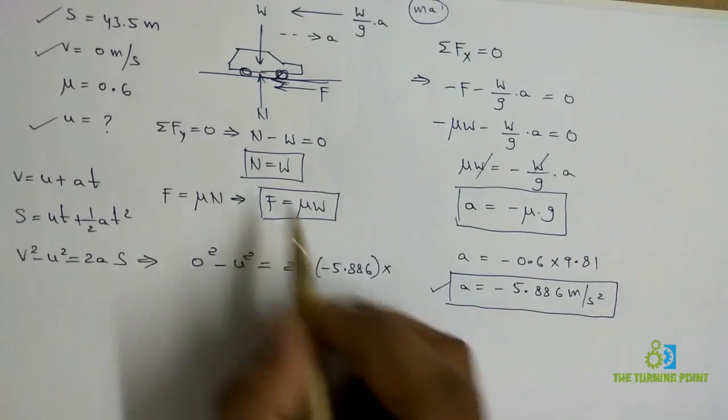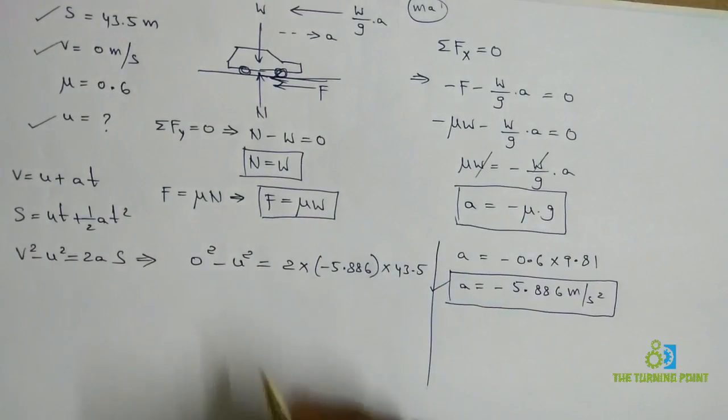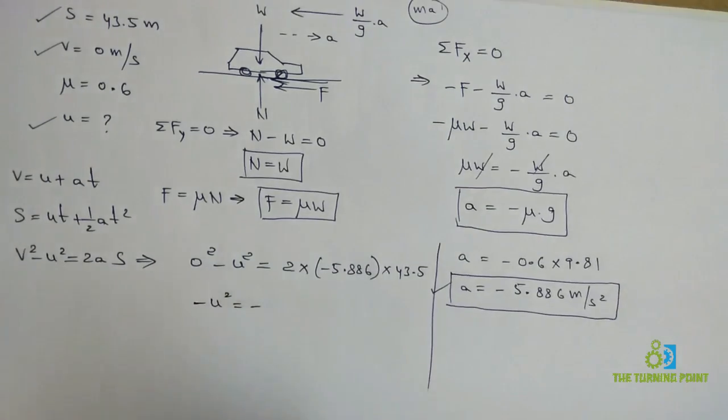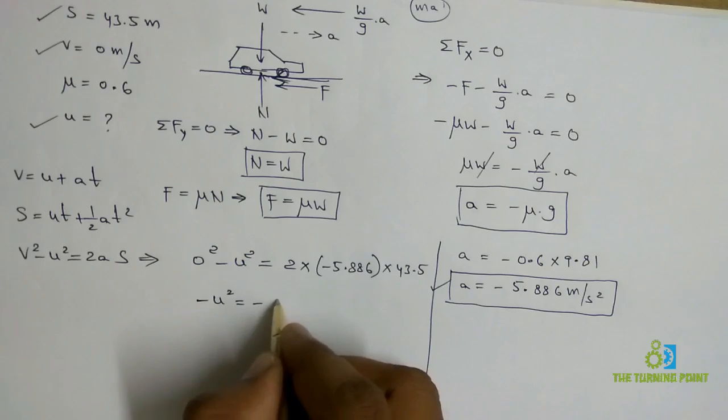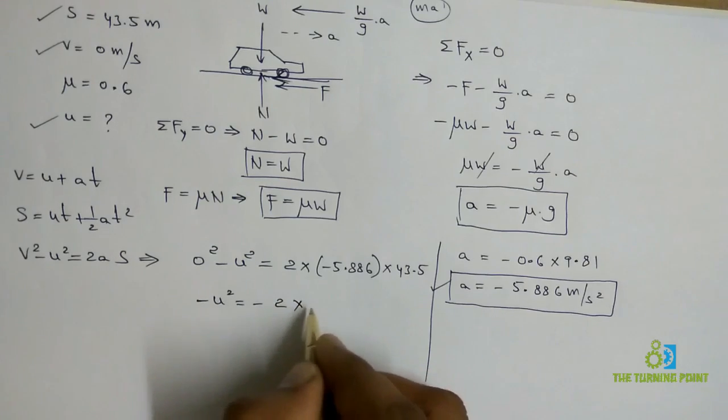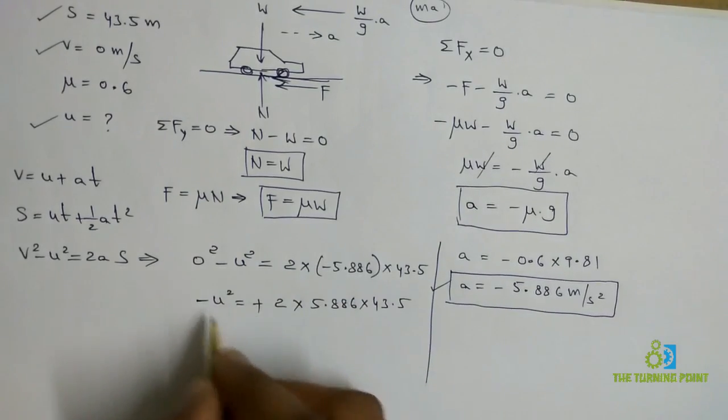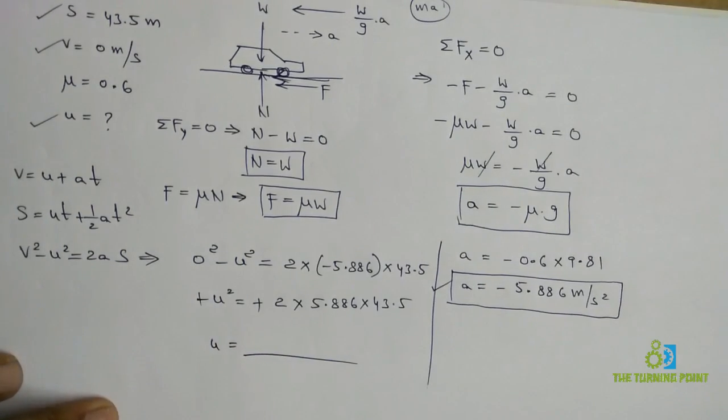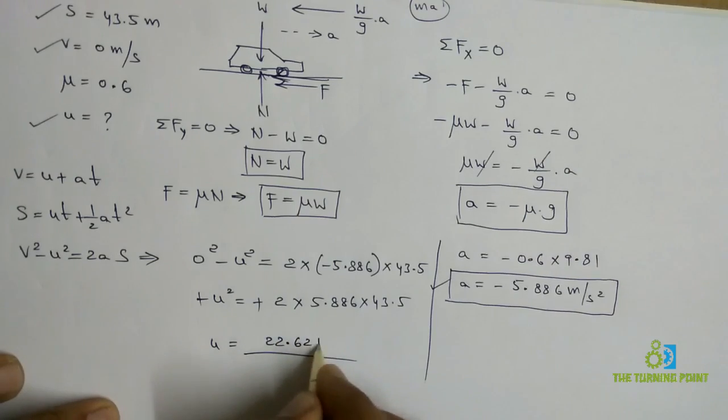So -u² is equal to 2 into 5.886 into 43.5. Minus minus becomes cancelled. From that you can calculate the value of u. When you solve that, you will get 22.62 meter per second.